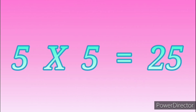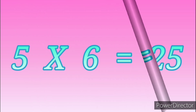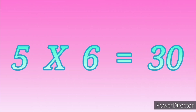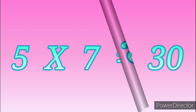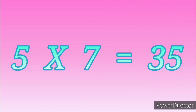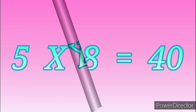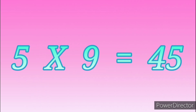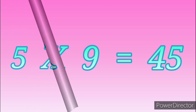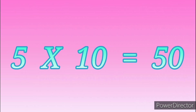5 fives are 25, 5 sixes are 30, 5 sevens are 35, 5 eights are 40, 5 nines are 45, 5 tens are 50.